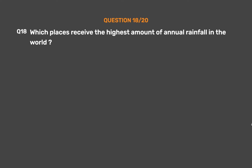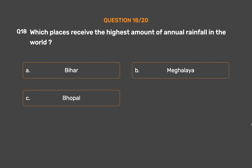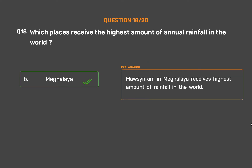Question number 18: Which place receives the highest amount of annual rainfall in the world? Option A: Bihar. Option B: Meghalaya. Option C: Bhopal. Option D: Jammu. The correct answer is Option B, Meghalaya. Mawsynram in Meghalaya receives the highest amount of rainfall in the world.